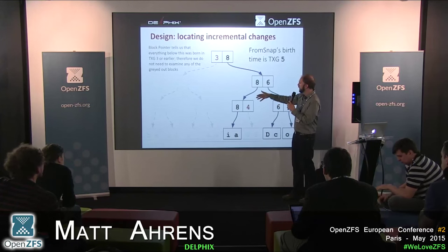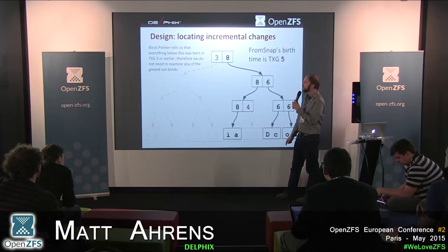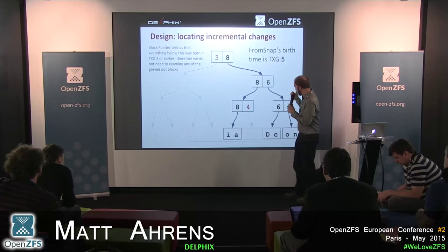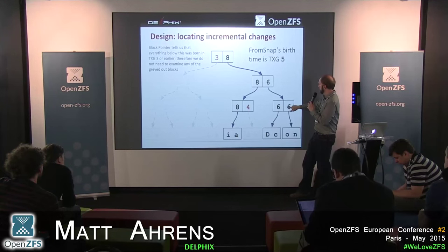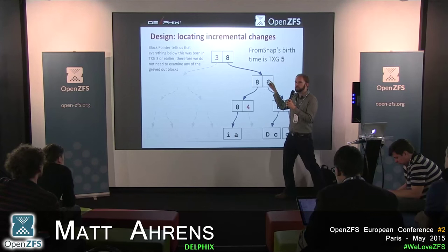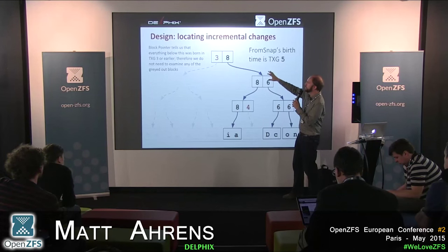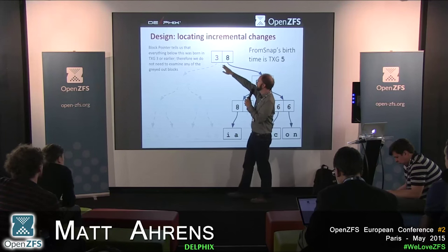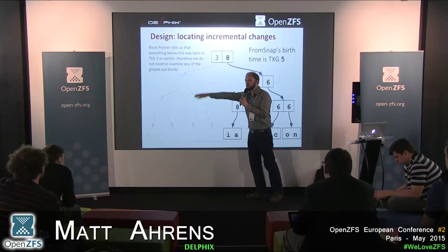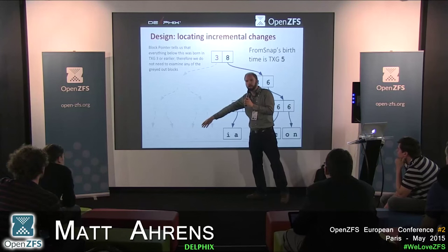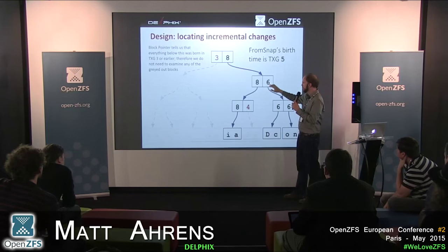Because ZFS is copy-on-write, whenever we modify a block we must modify all ancestor blocks up the tree. So if a block has birth time 6, all its ancestors must be 6 or later. To find changed blocks, we compare birth times to the from-snap birth time of 5. If an indirect block was born at time 3, nothing below it could be born after 3, so we skip all those blocks. If a block was born after time 5, we read it and continue down the tree.